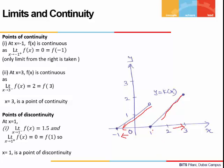Let's see what happens at x = 1. When x approaches 1 from the left, the function is moving towards 1.5, so the limit from the left is 1.5. When we approach 1 from the right, the function approaches 0, and the value of the function at 1 is also 0. Since the limits from the left and right are different, x = 1 is a point of discontinuity.